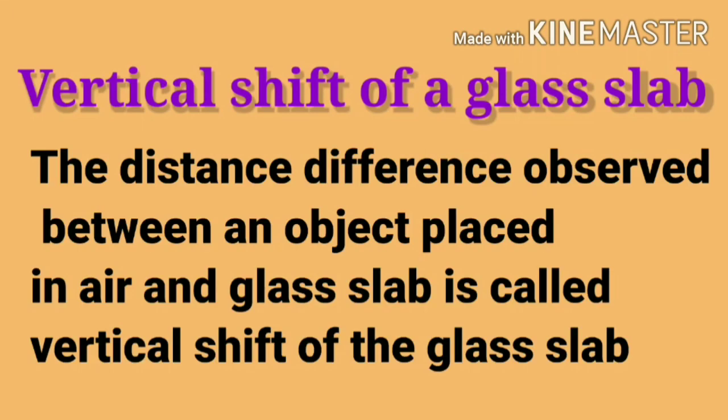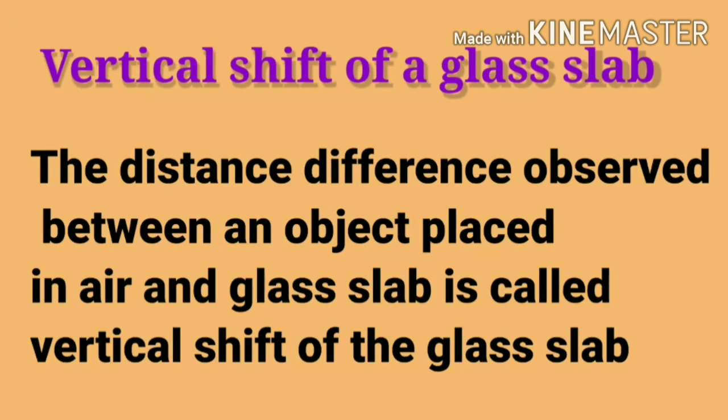What is vertical shift of a glass slab? The distance difference observed between an object placed in air and through a glass slab is called the vertical shift of the glass slab.